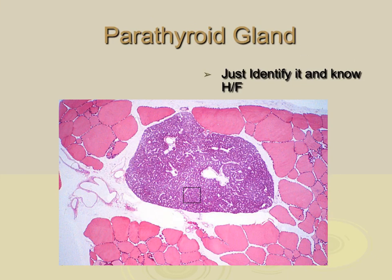While the pituitary gland is located up near the brain, the parathyroid and thyroid glands are located in the neck region. The thyroid is the larger gland of the neck, and the parathyroid consists of four pockets located around the thyroid gland. As we look at this slide, all of this structure is thyroid gland, and this smaller area here is the parathyroid gland. You need to be able to identify the parathyroid gland and know its hormone and function.